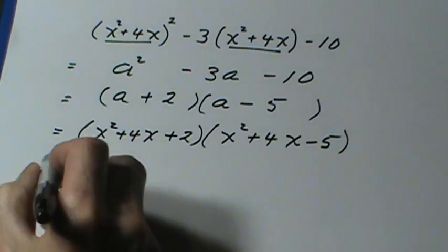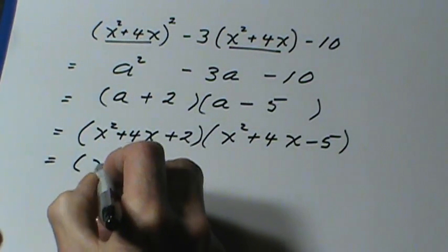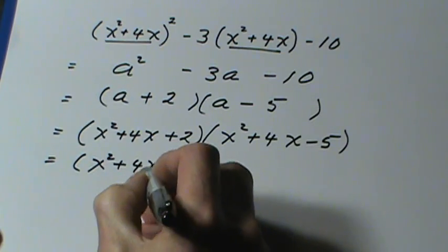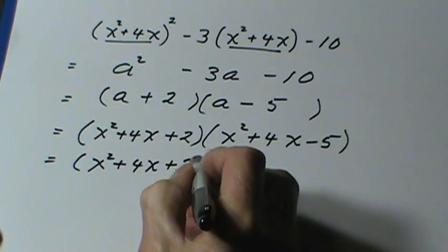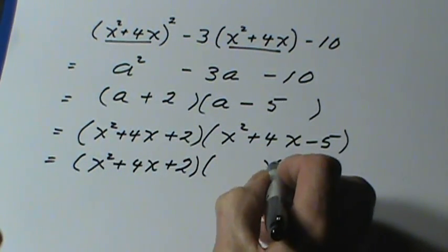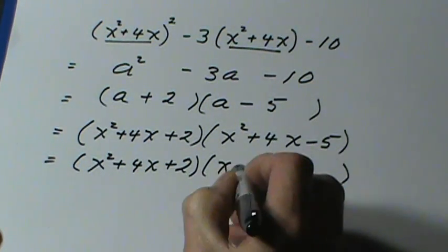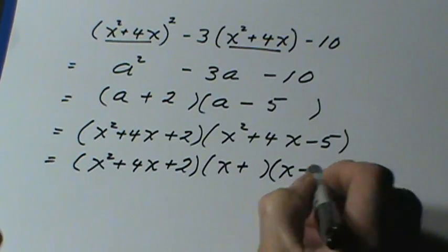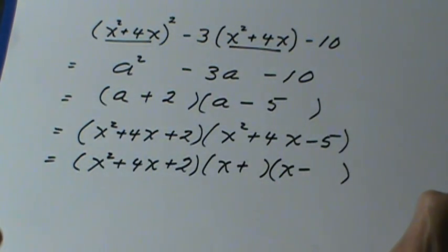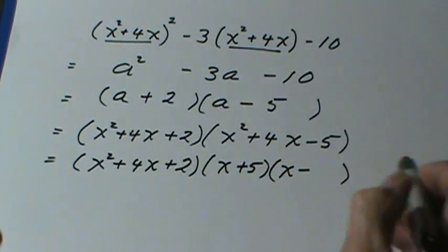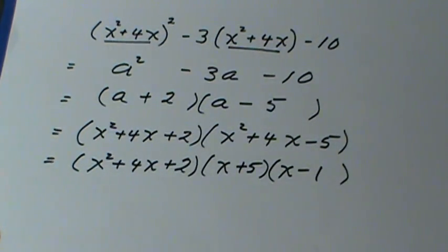Now that first bracket, there's no way I can factor that, because I can't find factors of 2 that add up to 4. So I'll just repeat that. However, the second bracket, signs are different. And I need factors of 5 with a difference of 4. So that's 5 and 1. And I'll put the 5 with the plus sign, and the 1 with the minus sign.